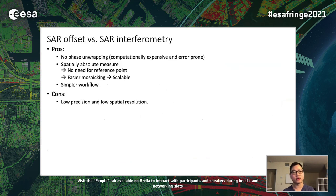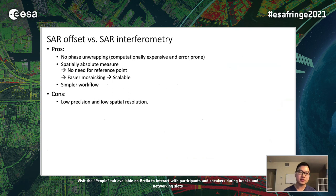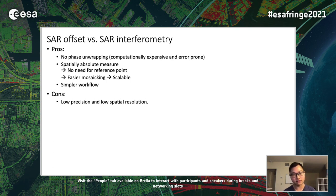Compared with InSAR, SAR offset has several advantages. First, it does not require phase unwrapping, which is computationally expensive and error-prone. Second, SAR offset is a spatially absolute measure, which means it does not require spatial reference points. This makes mosaicking or stitching easy and is more suitable for large area processing. The workflow to derive SAR offset is also simpler than InSAR. The disadvantage is that SAR offset has relatively low precision and low spatial resolution.